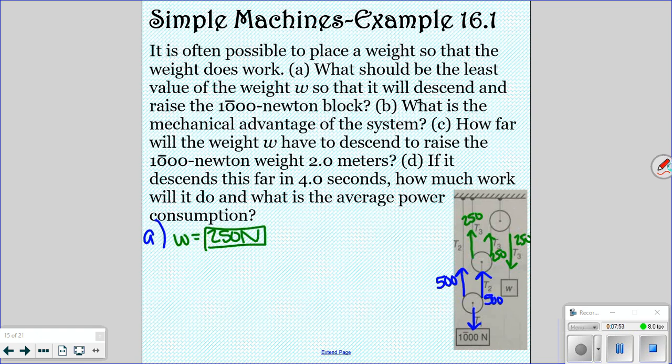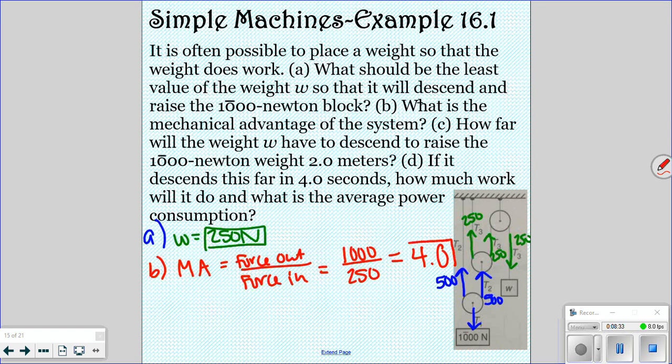Okay, for part B, it asks what is the mechanical advantage to the system? So for our mechanical advantage, I'm going to do MA. That is the force out divided by the force in. So our output force was 1,000 and our force that we actually had to apply, our force in, was 250. So 1,000 divided by 250 is 4. And we have two sig figs in this problem, so we're going to do 4.0. So that would be your mechanical advantage.